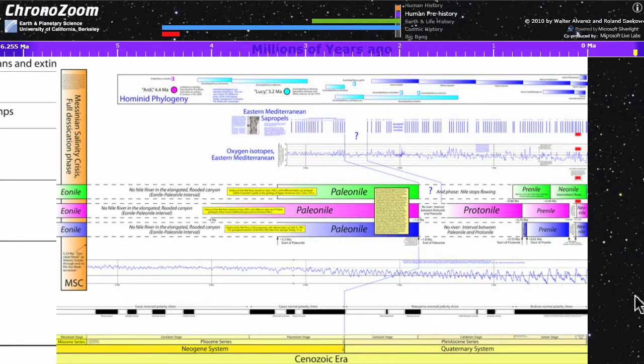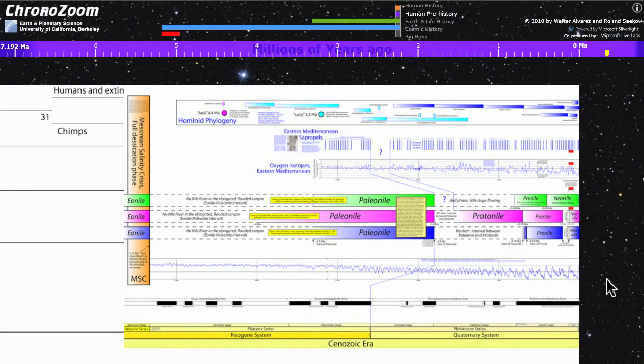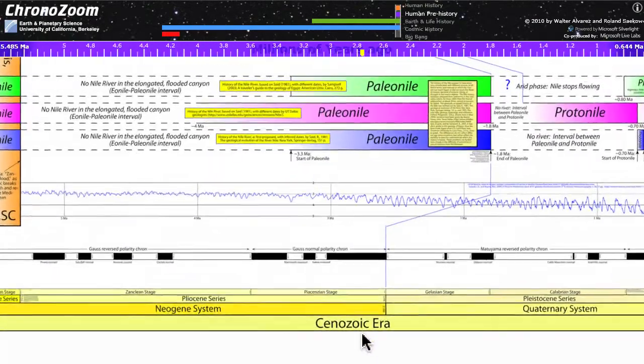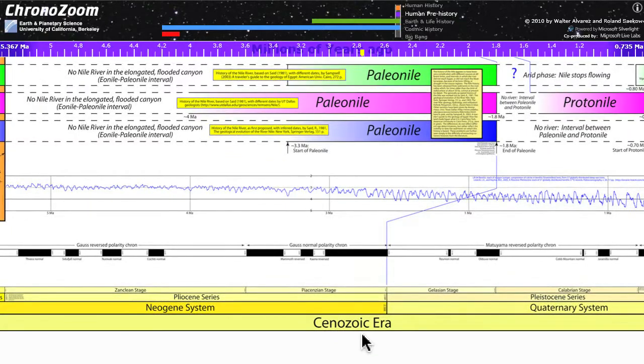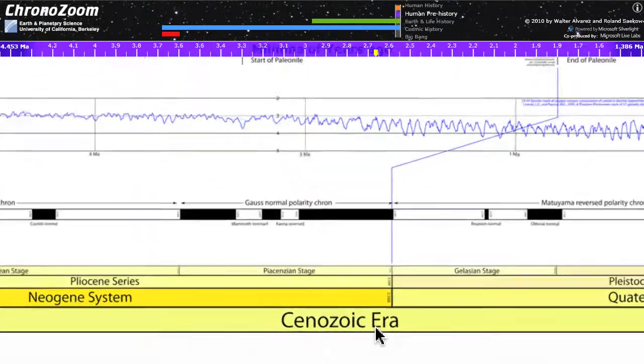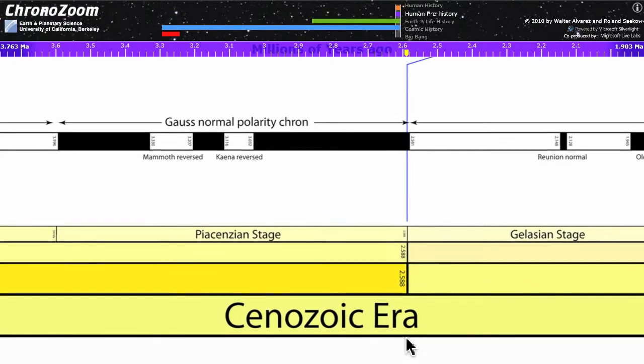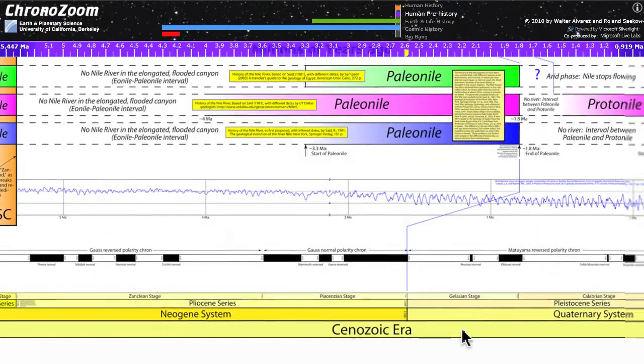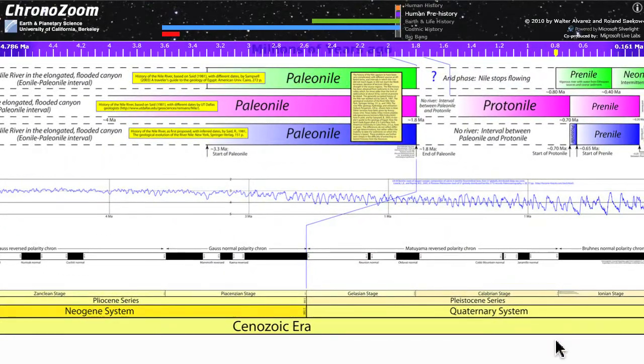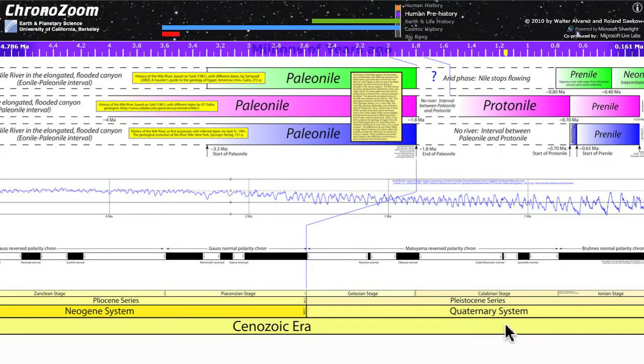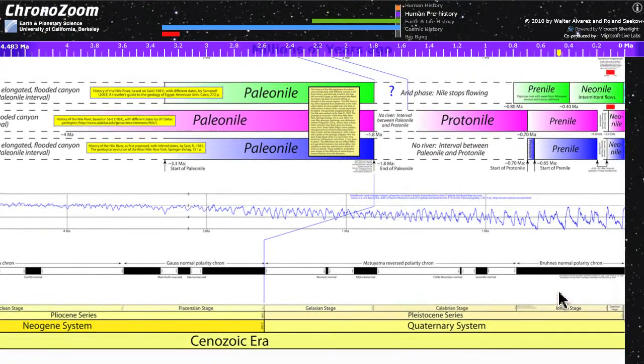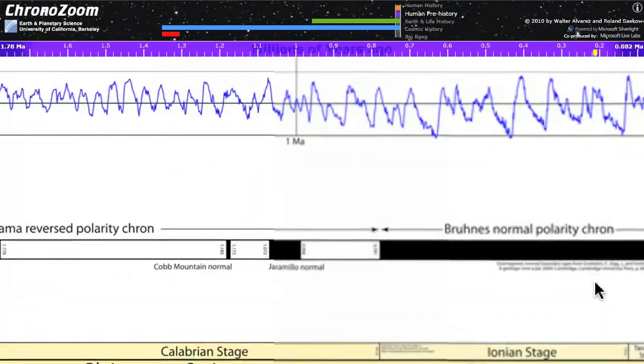This is our panel that shows you human prehistory. Now down around the bottom, we've shown the different epochs and stages of the geological time scale like the Cenozoic and the Piacentian. Those are the time intervals that geologists use when we're reading history written in rocks.